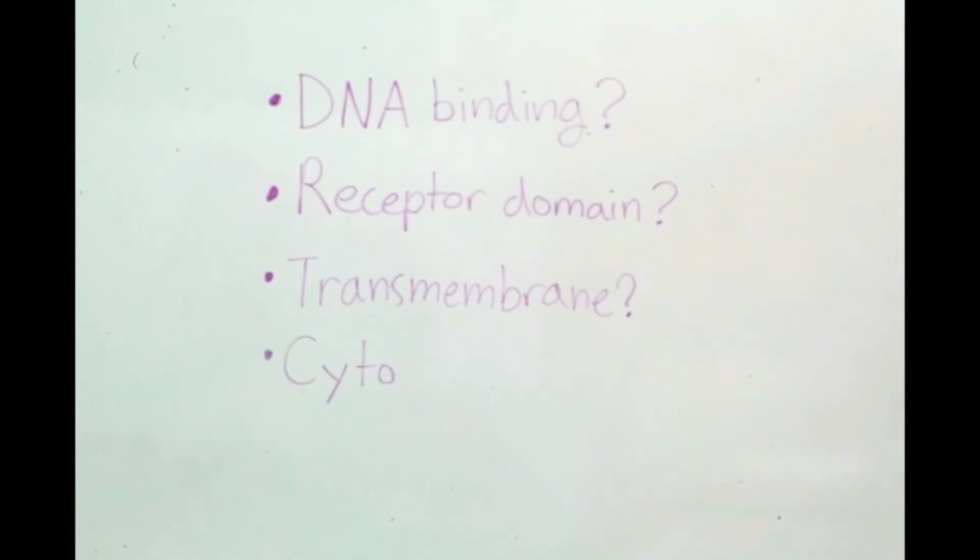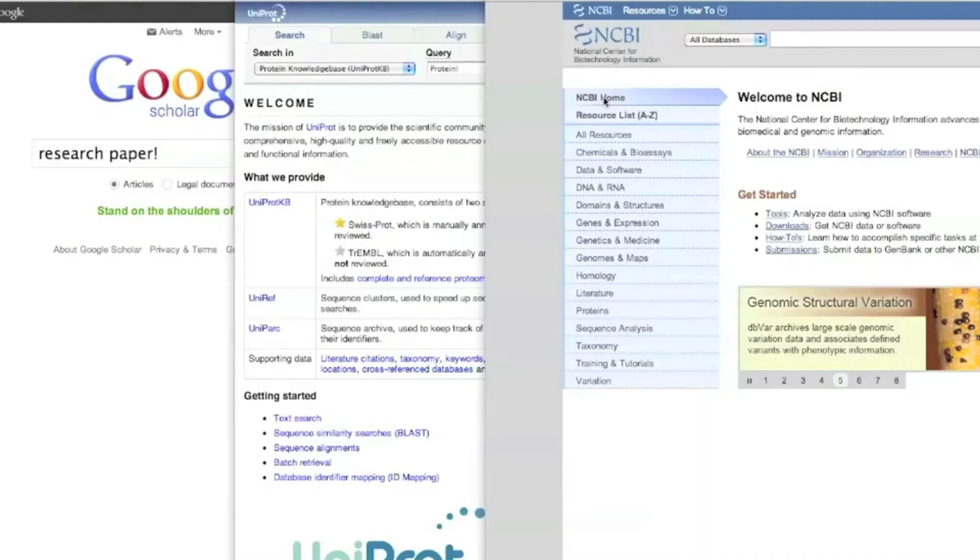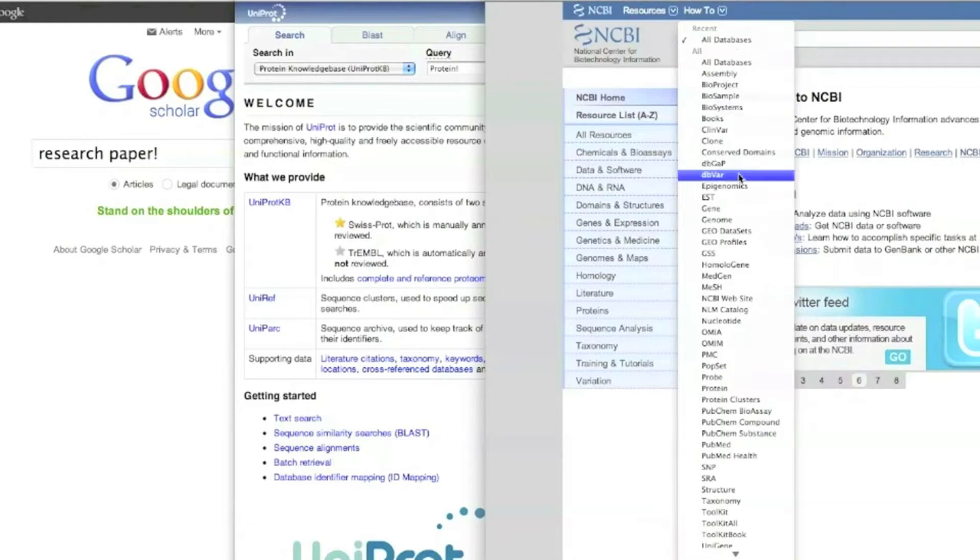Domains. Next, it is important to know what the functional domains of the protein are. Are these receptor domains or DNA binding, transmembrane or cytosolic? You may want to keep parts of your protein responsible for the behavior you want to keep for your fusion. You can look for this information in research papers and online protein databases, like UniProt, NCBI or more.